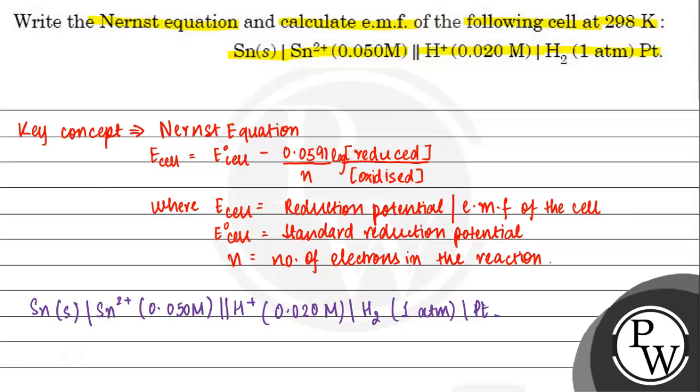If we write the cell reaction, we can write: Sn in solid state plus 2H+ ions in aqueous state gives Sn2+ in aqueous state plus H2 in gaseous state.